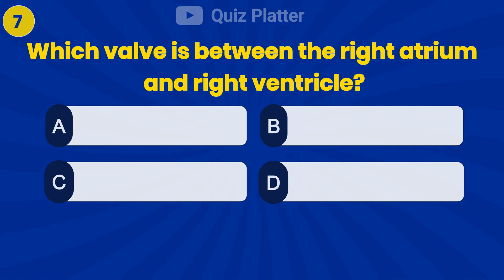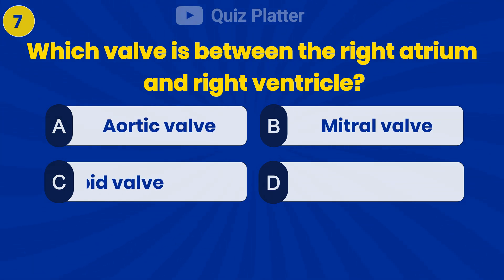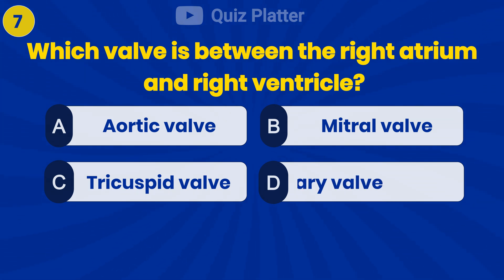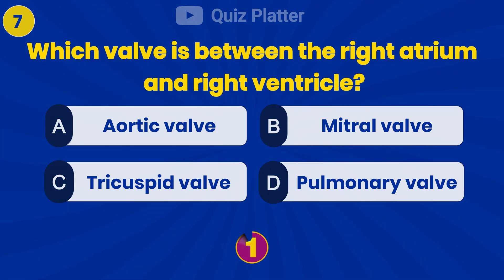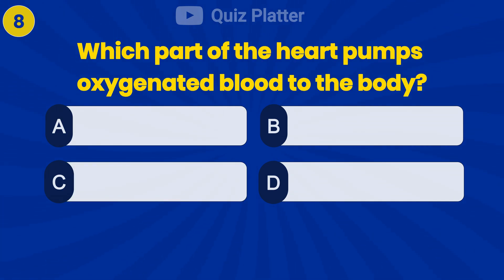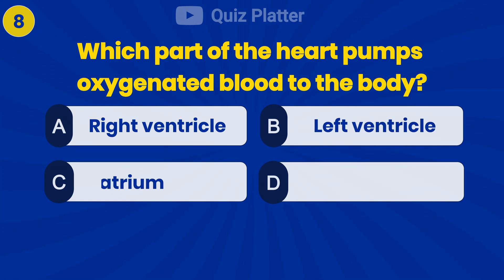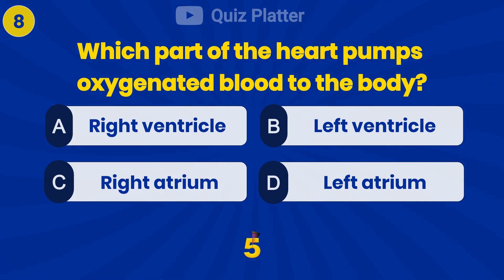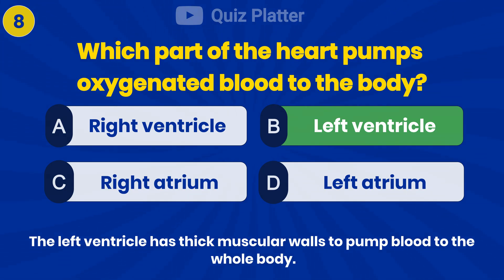Which valve is between the right atrium and right ventricle? Answer C: Tricuspid valve. Which part of the heart pumps oxygenated blood to the body? Answer B: Left ventricle.